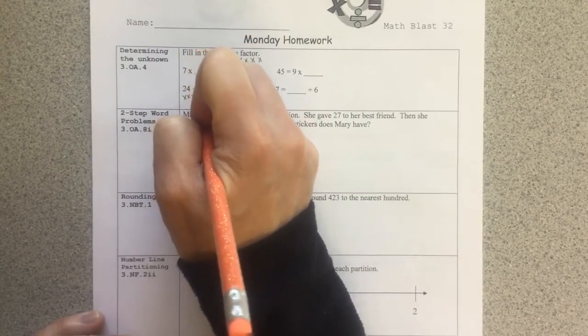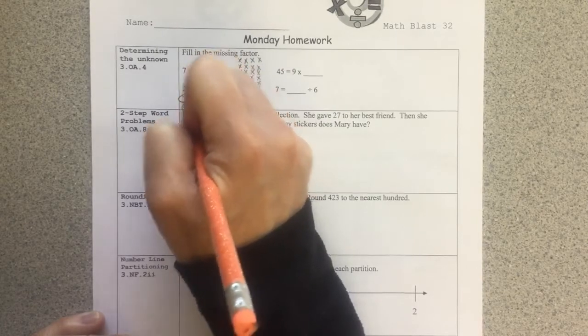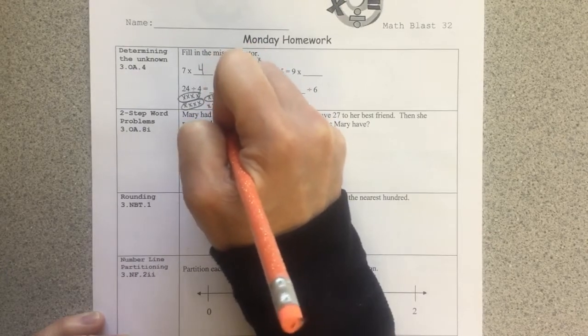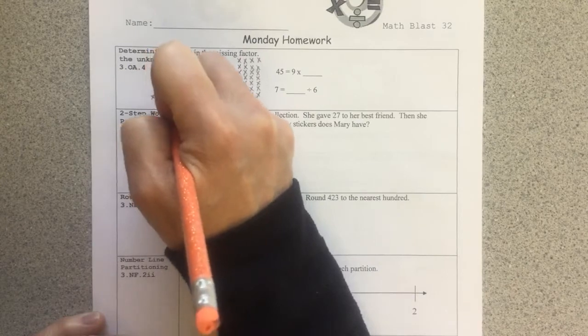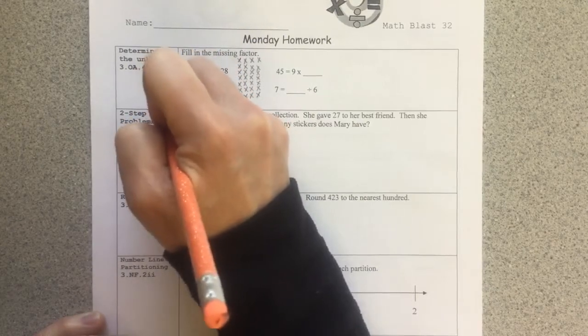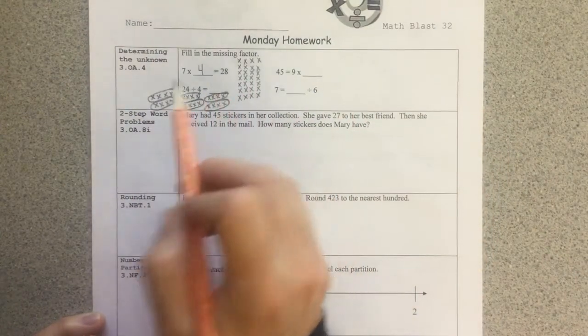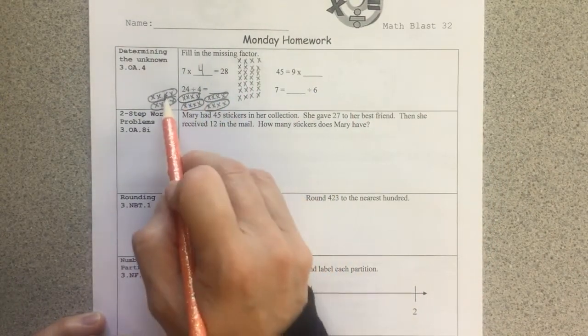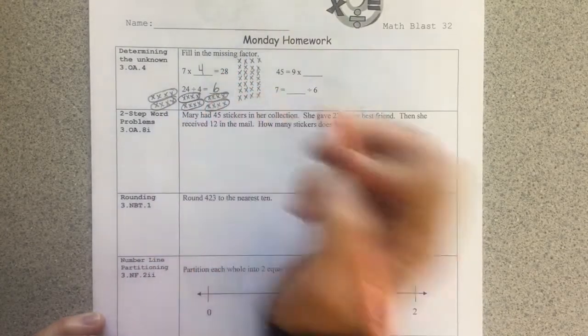So here is 4, 8, 12, 16, 20, and 24. I can do skip counting too. 4, 8, 12, 16, 20, 24. I would see that I have 6 groups of 4. So 24 divided by 4 is 6.